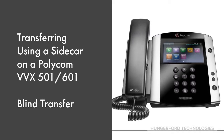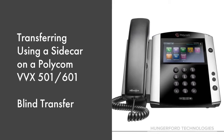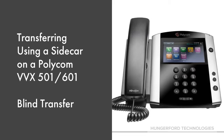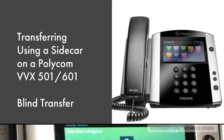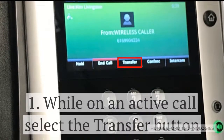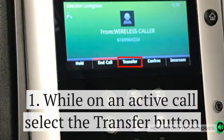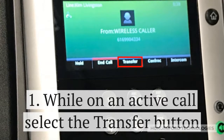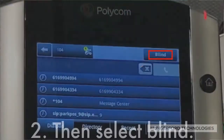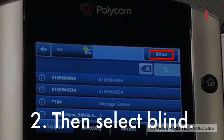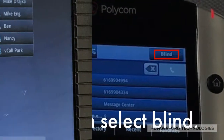In this short video, we will show you how to transfer using a sidecar on a Polycom VBX 501 and 601 phone. While on an active call, select the transfer button, then select blind.